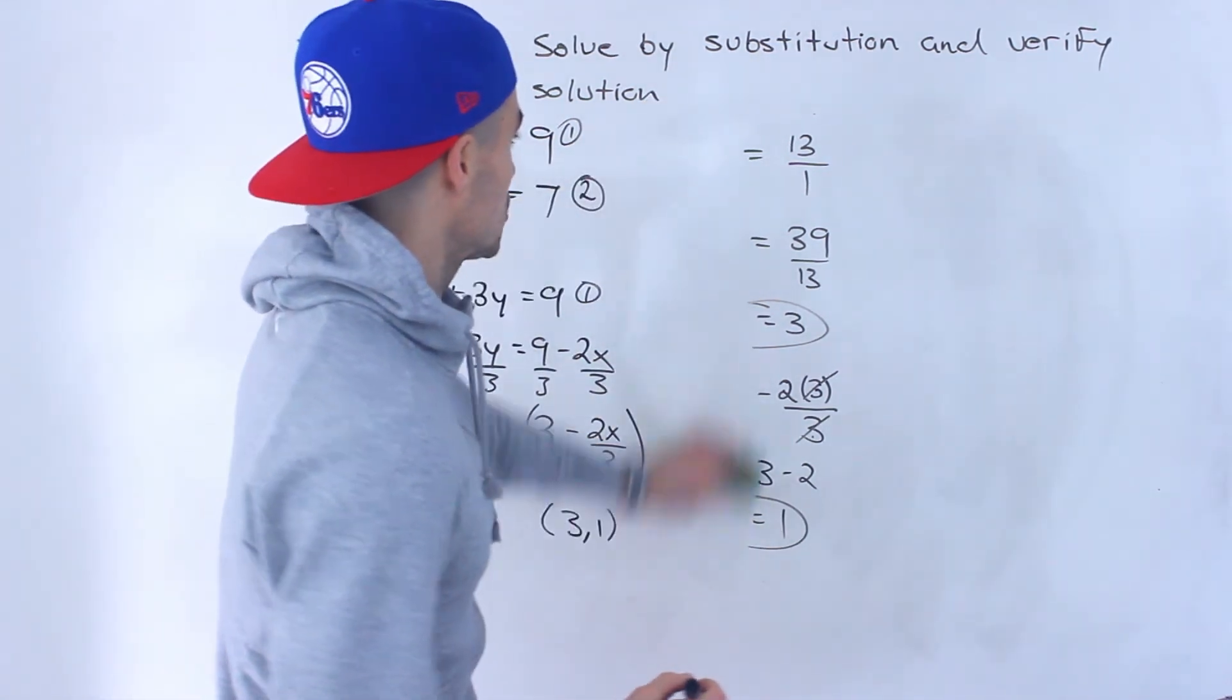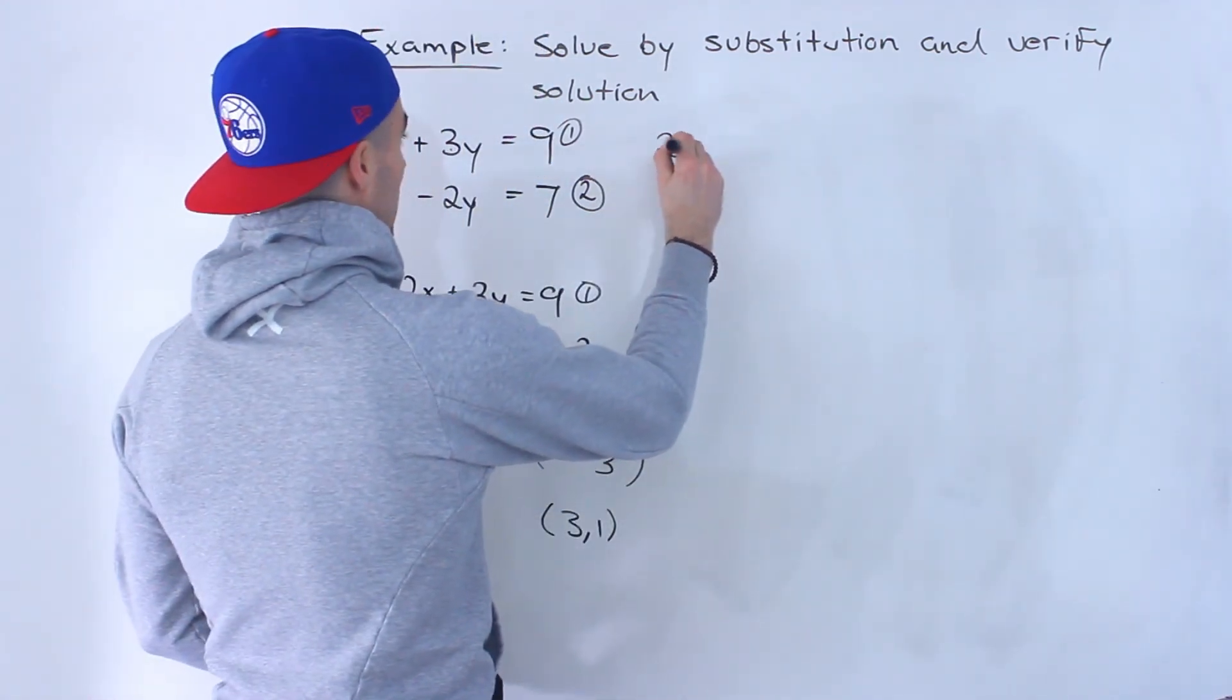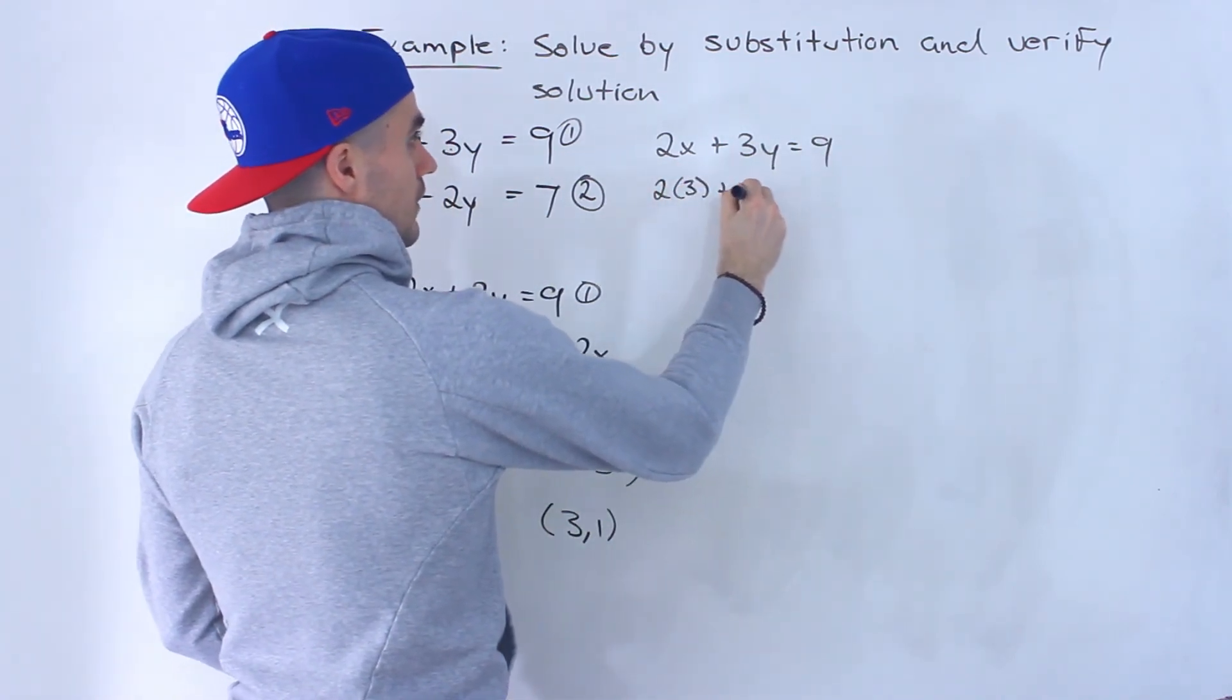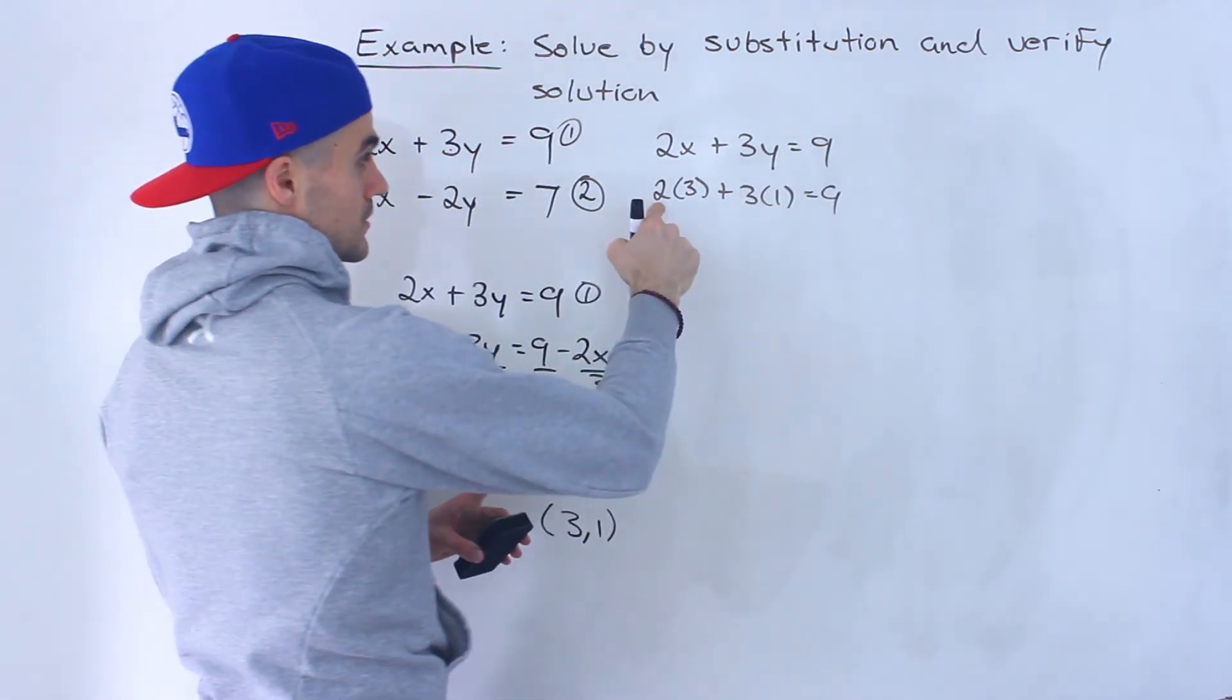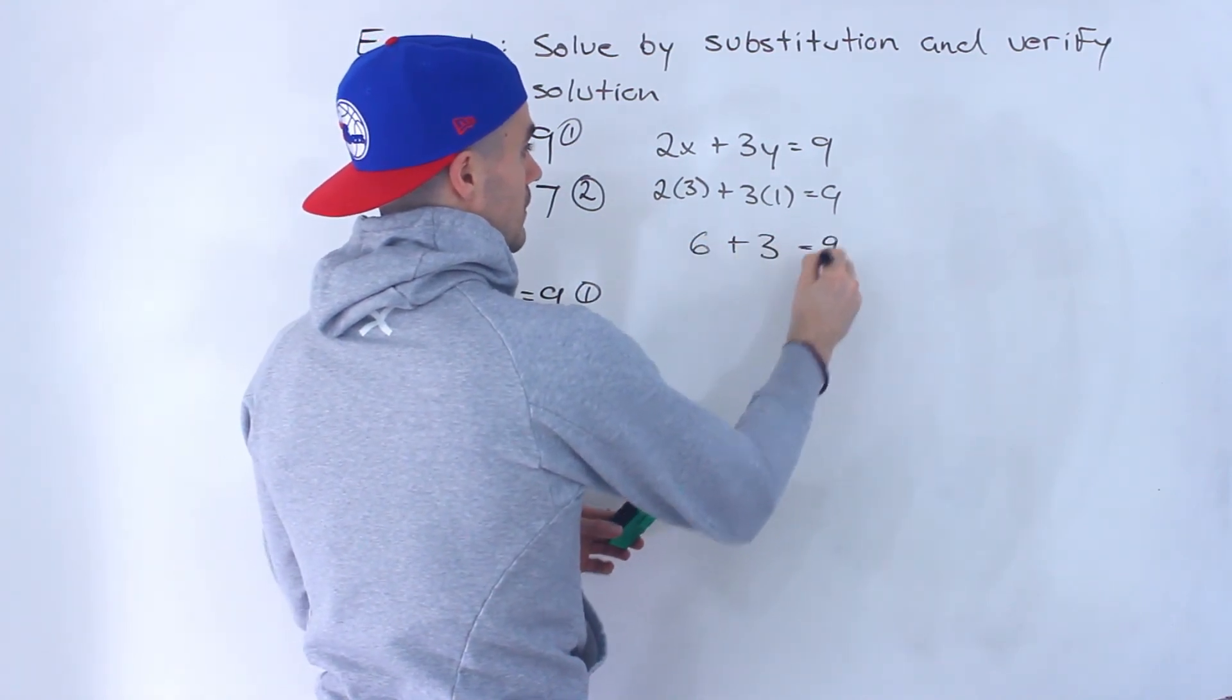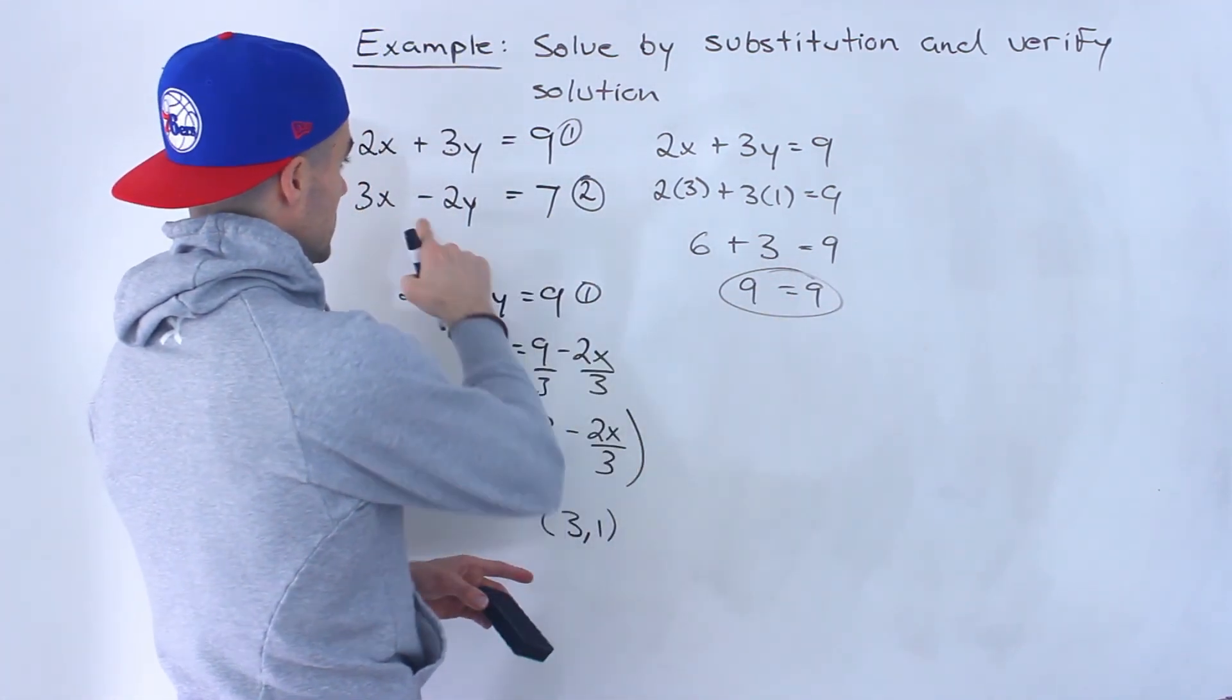And then if we were to do a check on it, we would take the original lines, plug in the solution, and we would just make sure that the left side equals the right side. So notice here, 6 plus 3, that would give us, let's just write out, that would give us 9, which equals 9. So left side equals right side here. That's all good.